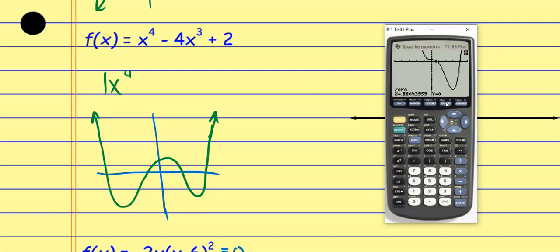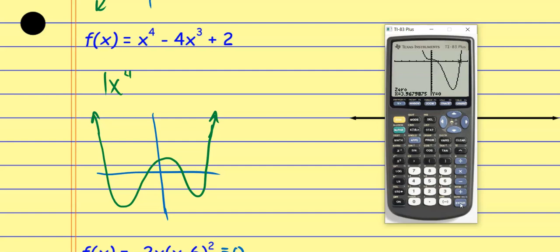I write that ordered pair off to the side and now calculate the other x-intercept. Second, Calculate, Zero again. It's a little bit of a pain scrolling around to find these on the TI, but it is what it is. Left bound, hit Enter, then to the right and hit Enter, then take a guess. I can't go outside of those left and right bound limits or it'll give me an error. It gives me (3.968, 0), so I write that ordered pair down.